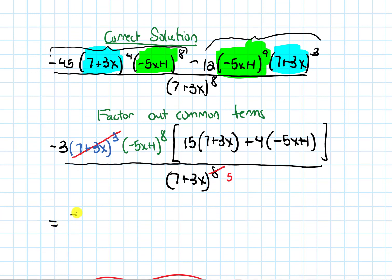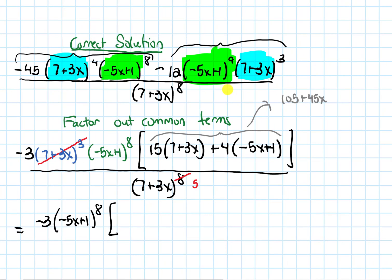So we end up with -3(-5x+1)^8. And then in brackets, let's simplify this whole thing. So if you distribute the 15, 15 times 7 is 105. And then I'll get +45x. If I distribute the 4, we'll get -20x. And then +4.